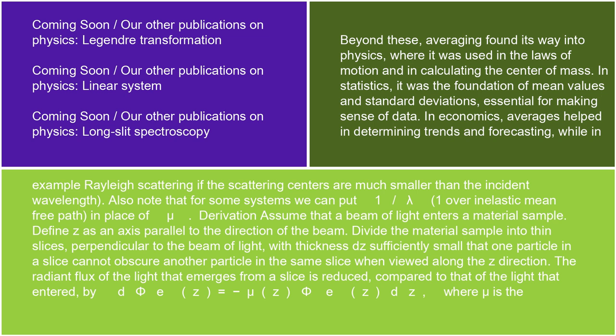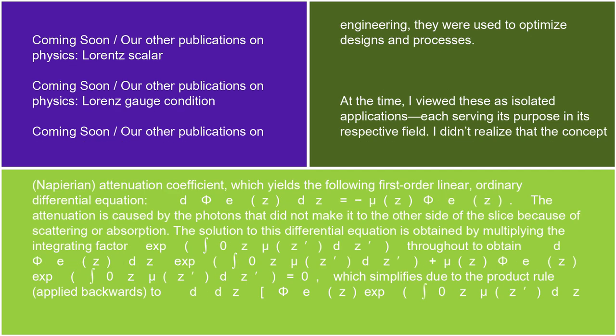Derivation. Assume that a beam of light enters a material sample. Define z as an axis parallel to the direction of the beam. Divide the material sample into thin slices perpendicular to the beam of light, with thickness dz sufficiently small that one particle in a slice cannot obscure another particle in the same slice when viewed along the z direction. The radiant flux of the light that emerges from a slice is reduced compared to that of the light that entered, by dΦ_e(z) = −μ(z)Φ_e(z)dz, where μ is the Napierian attenuation coefficient, which yields the following first-order linear ordinary differential equation: dΦ_e(z)/dz = −μ(z)Φ_e(z).